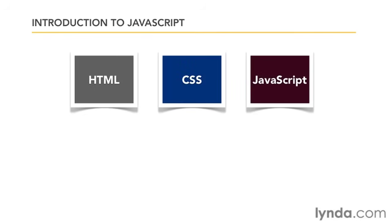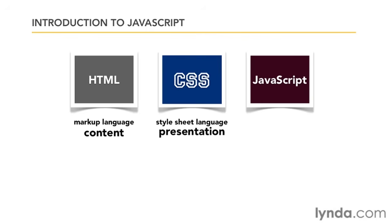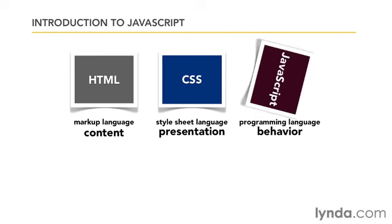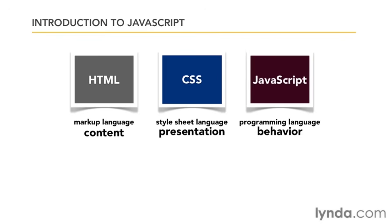It's very common to see JavaScript referred to as one of the three core languages of web pages. You have the HTML markup language for content and structure — what's your headline, how many divisions are in your page, what are the contents of your paragraphs? Then CSS, the style sheet language for presentation — what font does the headline use, what's the background color of the page? And JavaScript, the programming language for behavior and interactivity — what happens when you mouse over a menu, or type the wrong value in a form field, or how long does a photo slideshow take to move from one image to the next?